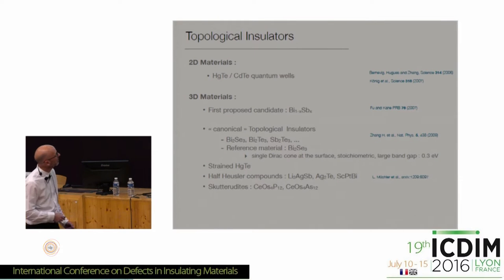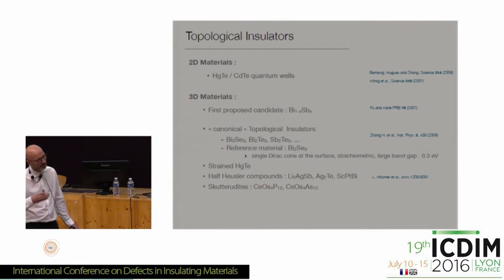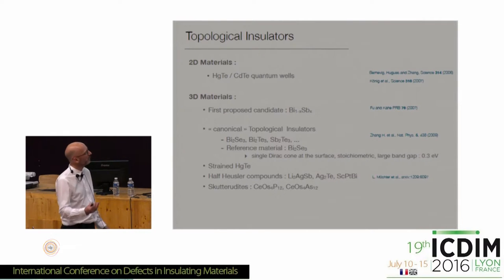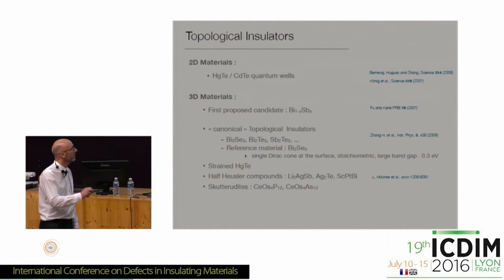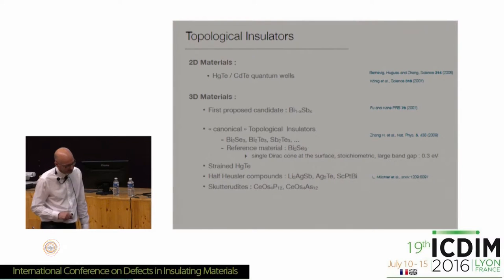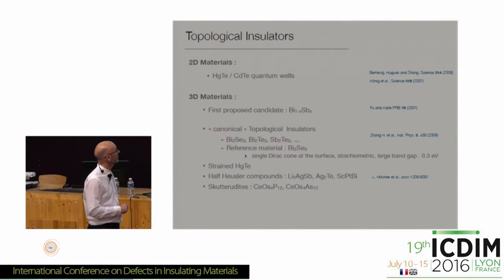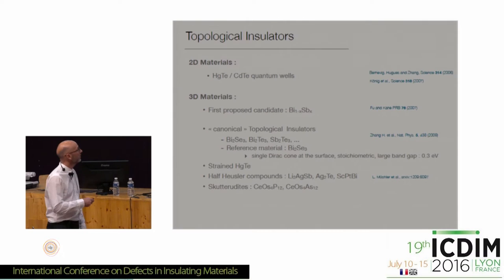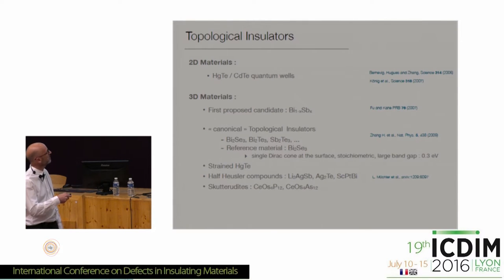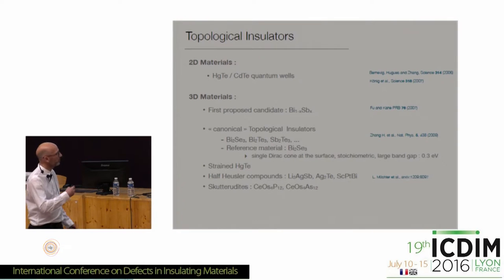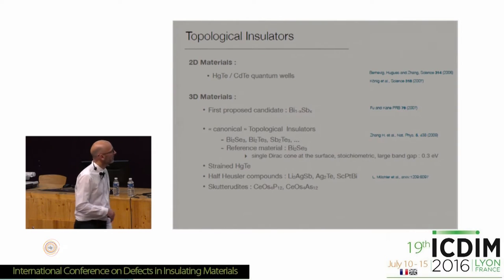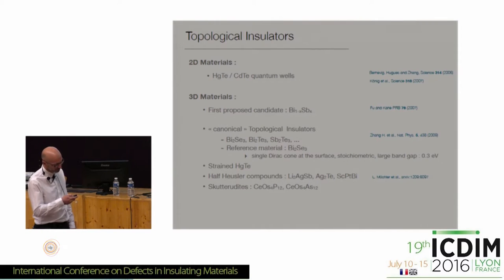There are now many compounds identified as topological insulators, both in 2D and in 3D: quantum wells of mercury telluride and cadmium telluride, and a whole class of bismuth compounds with strong spin-orbit. Now there's a third class of topological insulators, and the list is growing continuously.